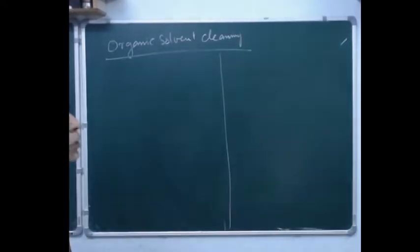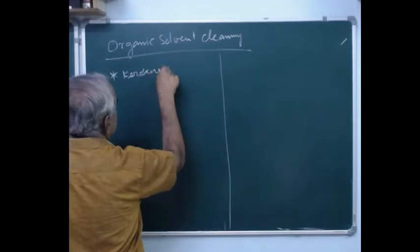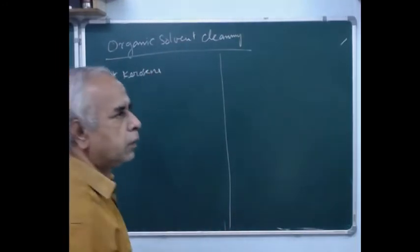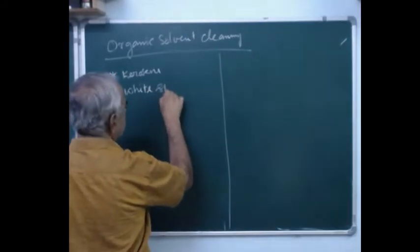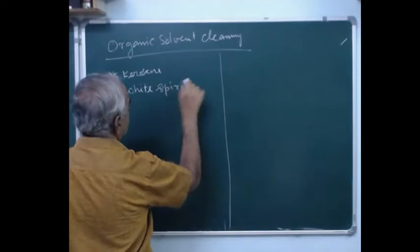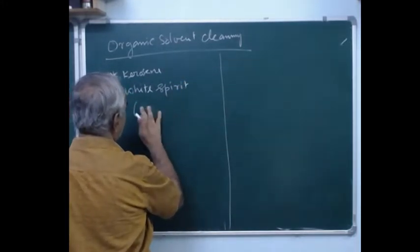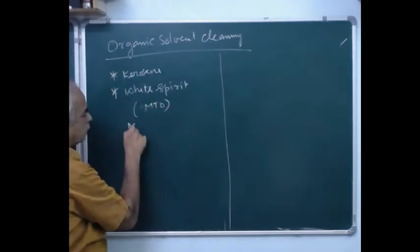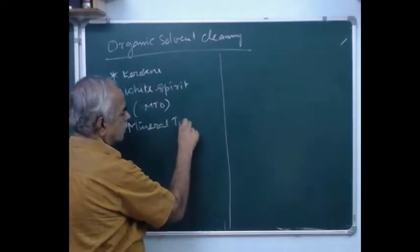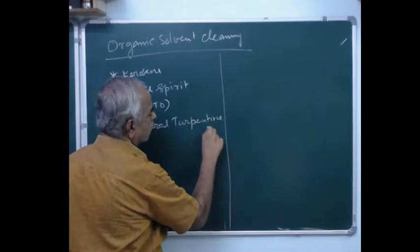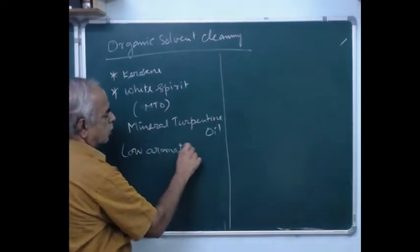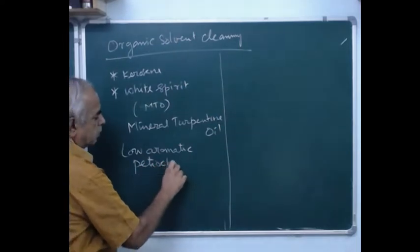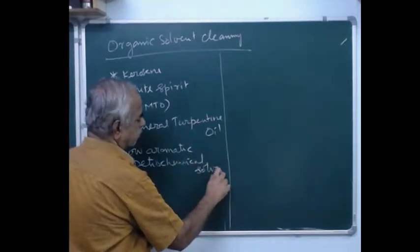So, here you can use kerosene for organic solvent cleaning. This is a lower aromatic solvent — in Chennai we call it kishno oil. Then we can use white spirit; these are all low aromatic solvents. White spirit is used as an enamel thinner also, and it is also called MTO — mineral turpentine oil. These are all low aromatic petrochemical solvents.